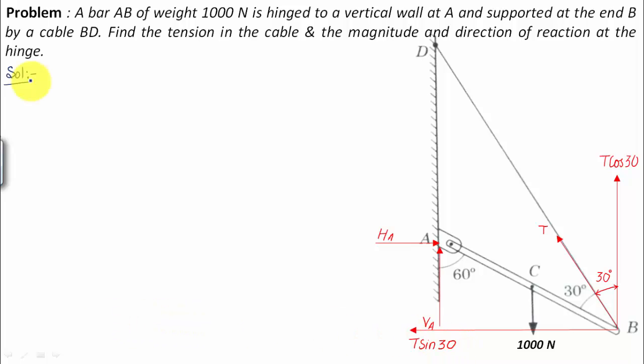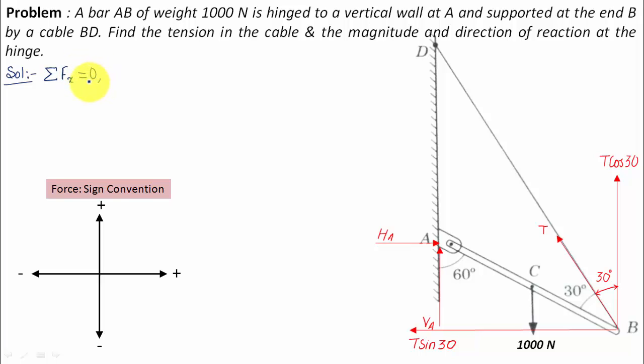Now that we've identified all the forces, we'll compute the values of HA, VA, and T using the three equations of equilibrium: summation of Fx equals zero, summation of Fy equals zero, and summation of moments about a certain point equals zero. Let's start with summation of Fx equals zero.